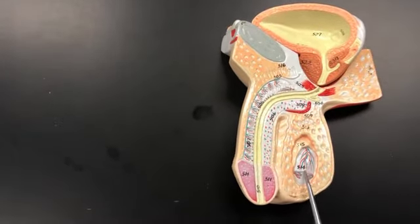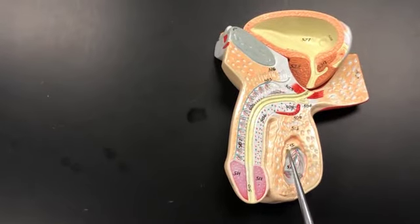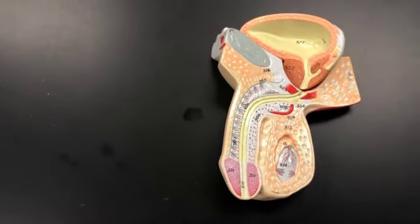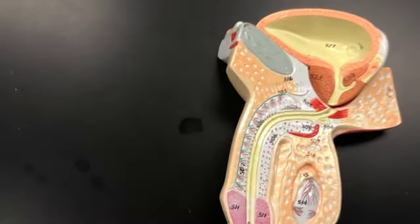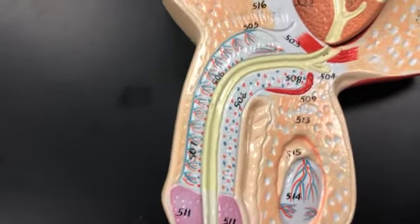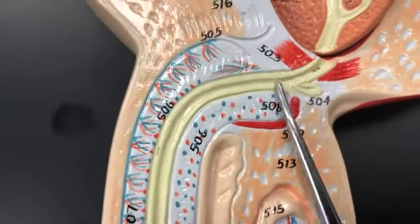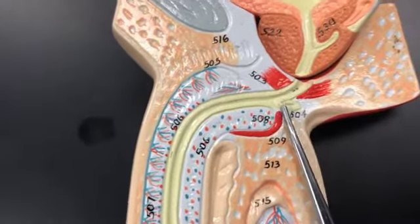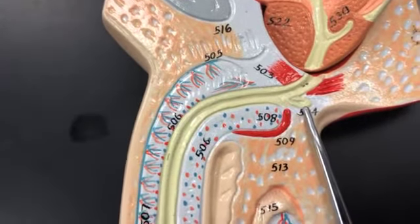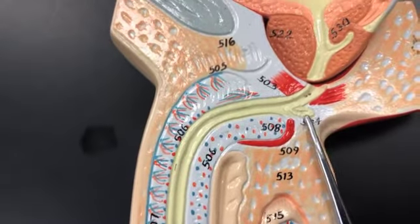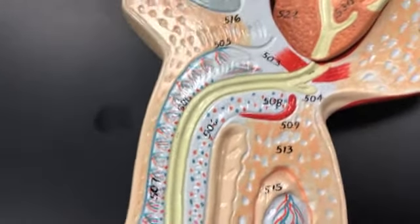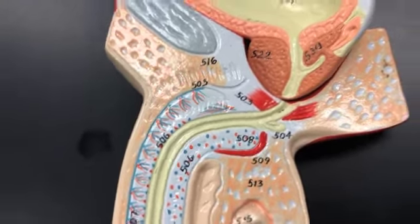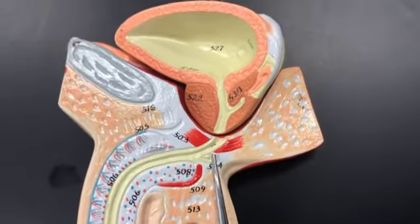Testicle, epididymis, scrotum. Now one thing that's unique that you can see on this model — there's the urethra. This little piece coming off the urethra is the bulbo-urethral gland. It's the only model where we can see the bulbo-urethral gland, right there.